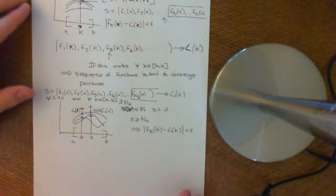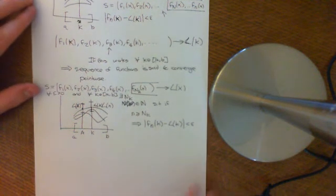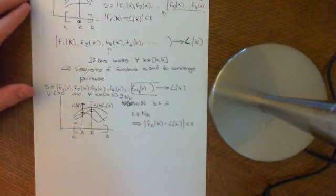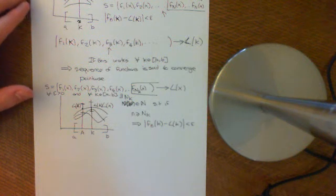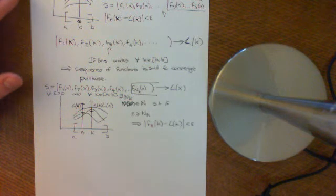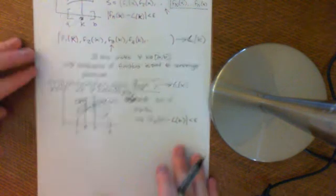Our objective for this video is to show that if we have a sequence of continuous functions which converges to a limit in the metric space C(A,B) with the supremum metric, i.e. it converges to another continuous function uniformly, then it's also going to converge pointwise to that limit function.